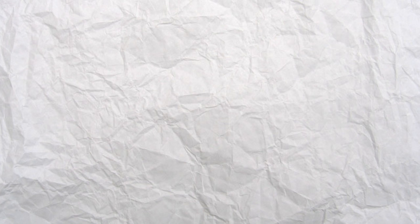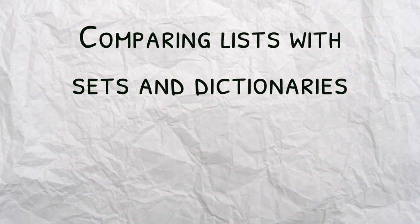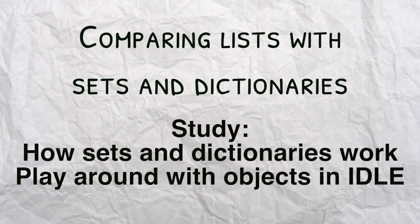So next we're going to be talking about comparing lists with sets and dictionaries. Unfortunately again I could not find an example, but make sure you know how sets and dictionaries work and just kind of, you know, make a list in IDLE, make a set in IDLE, make a dictionary in IDLE and kind of just play around with them, mess around, so you kind of understand how they work by interacting. That's the best way you're going to learn computer science is by interacting with the actual data.